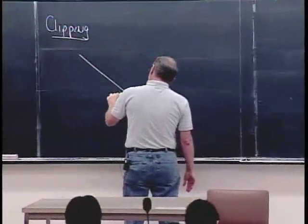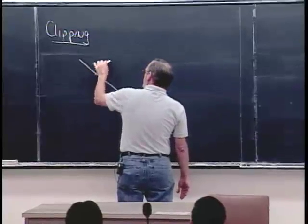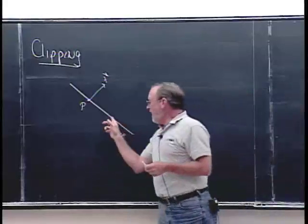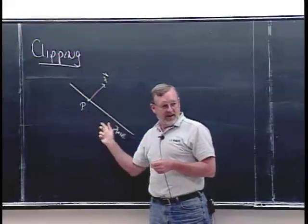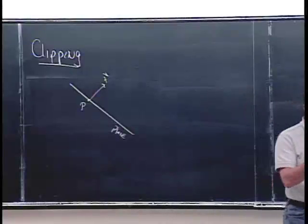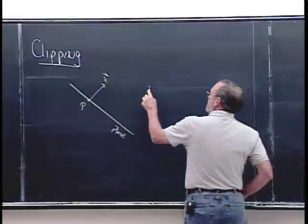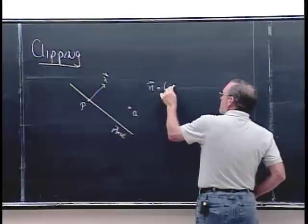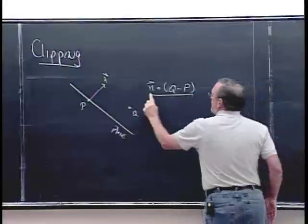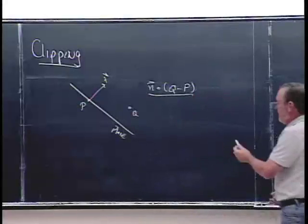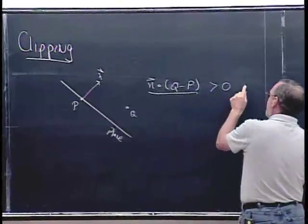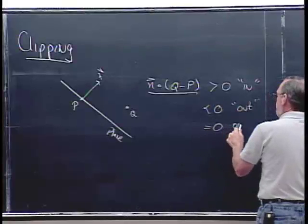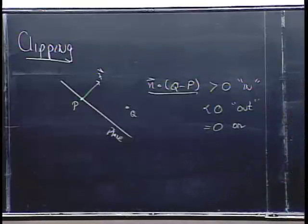Here's clipping again. We had a plane defined by normal vectors and points. The characteristic is that for any point in the plane, the vector between that point and P dotted with N equals zero — they're perpendicular. For any point Q outside the plane, we look at N · (Q − P): if it's greater than zero, it's in; if it's less than zero, it's out; if it's equal to zero, it's on the plane.